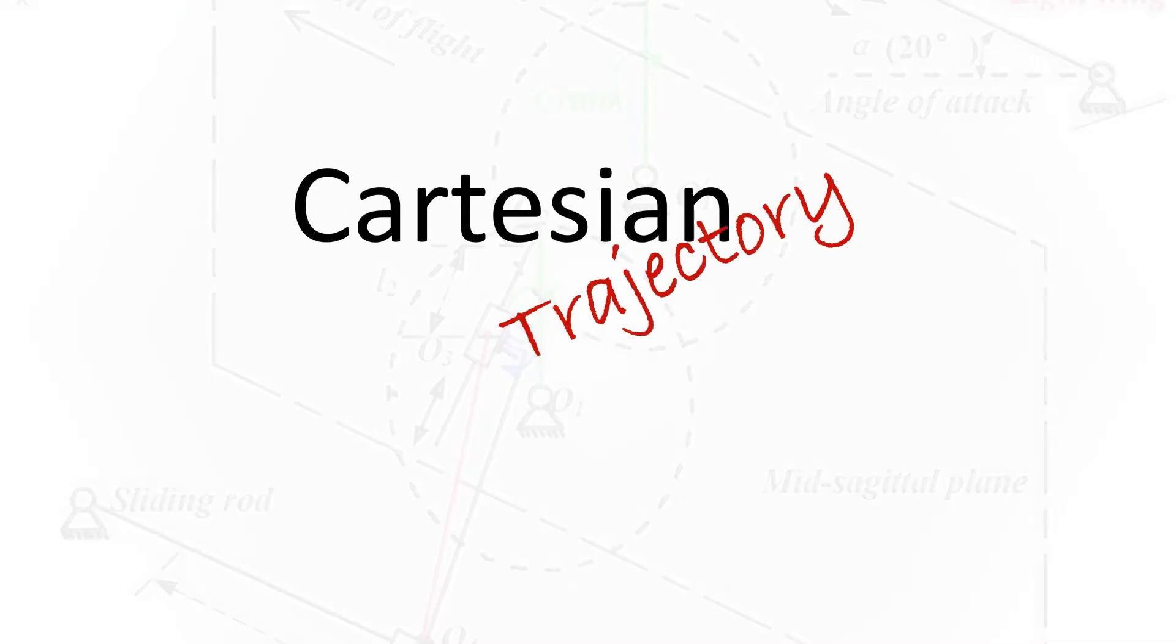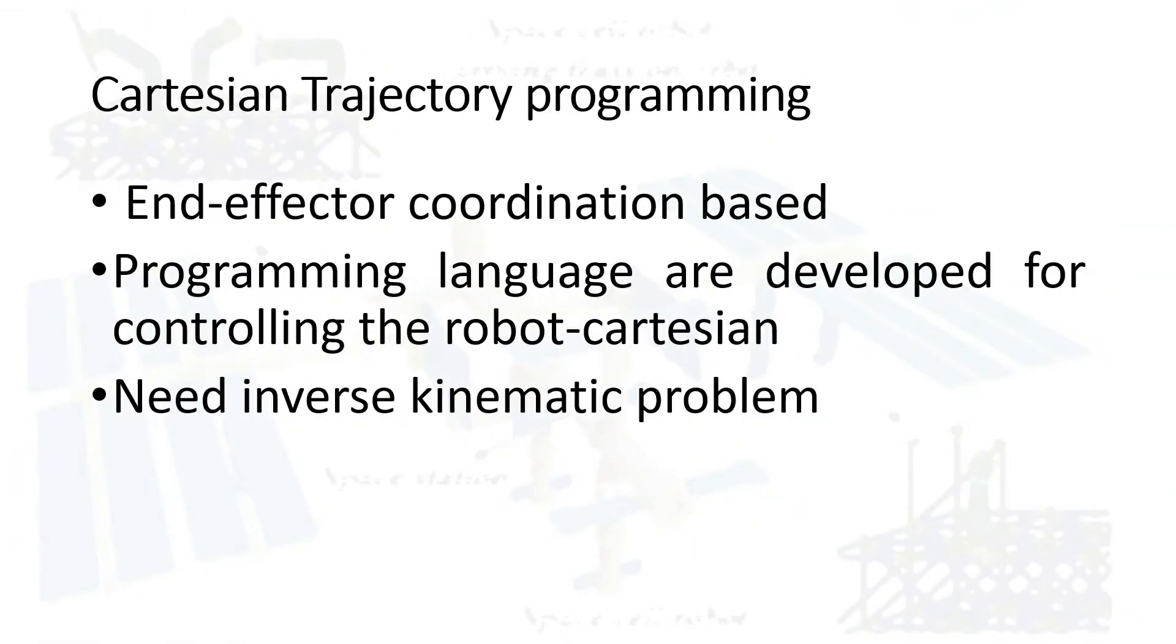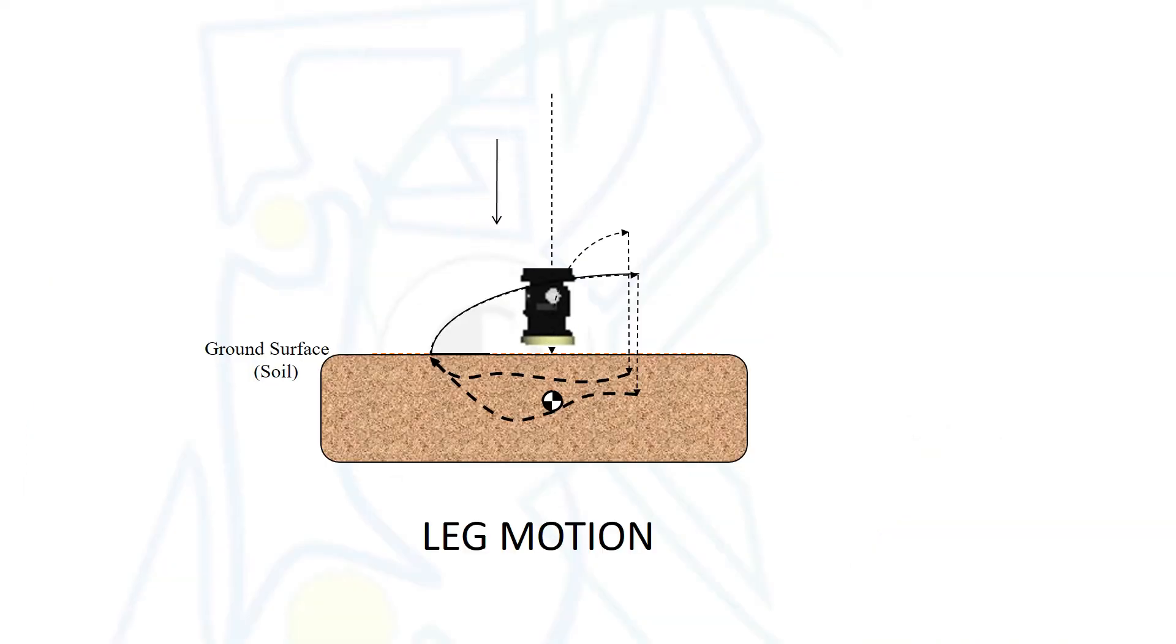Another one is Cartesian programming. Cartesian programming is actually focusing on the end effector which is applied in the offline programming or recording programming methods. This kind of programming always applies in robot developments, in robot research and development projects.